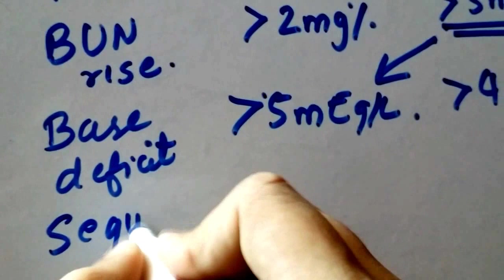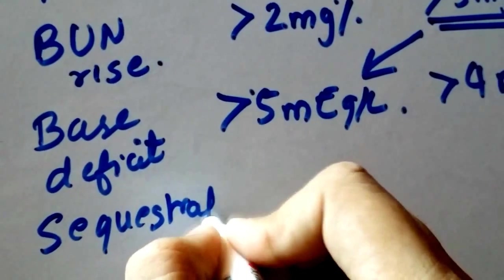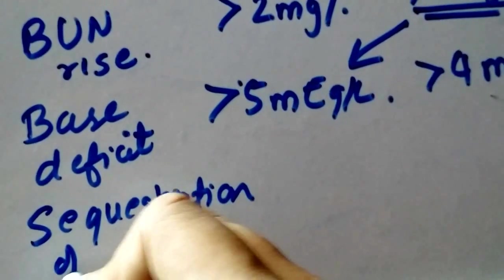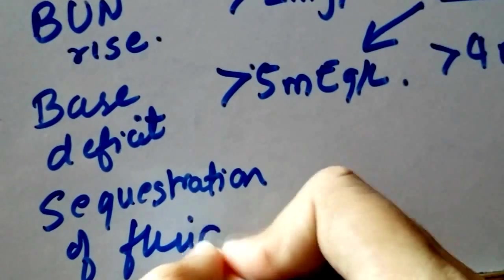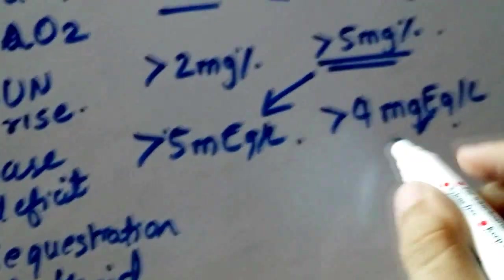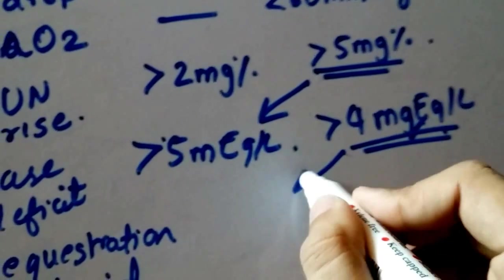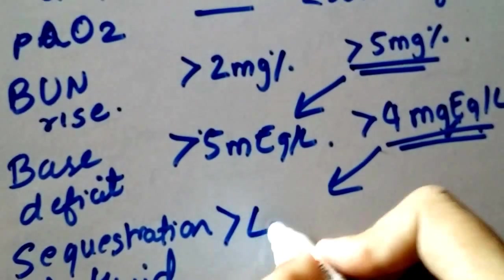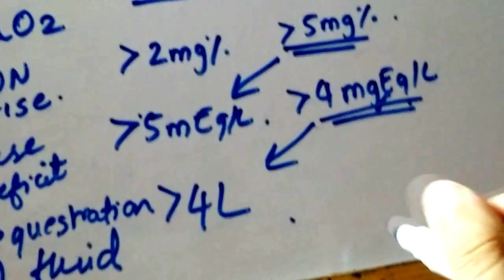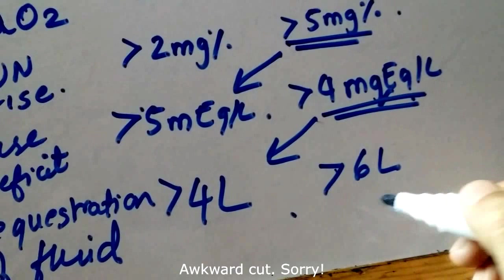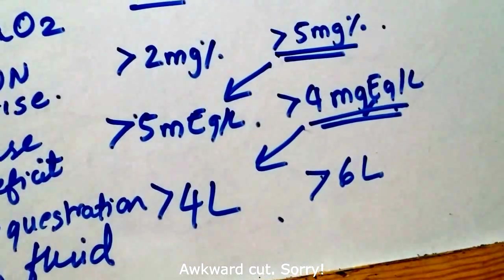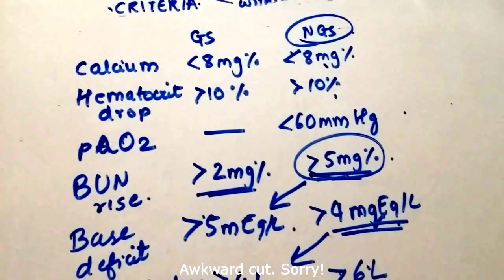And the S stands for fluid sequestration. And in gallstone pancreatitis, it is, I just carry forward 4, so it's if it's greater than 4 liters. And in non-gallstone criteria, it's greater than 6 liters.